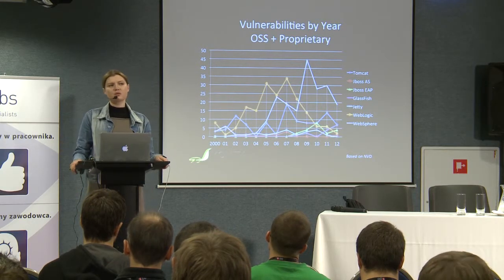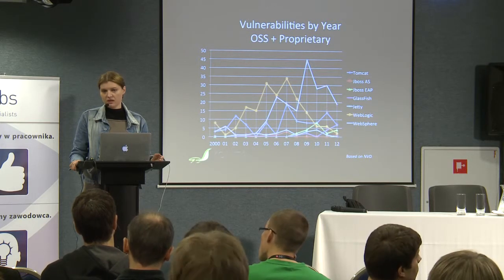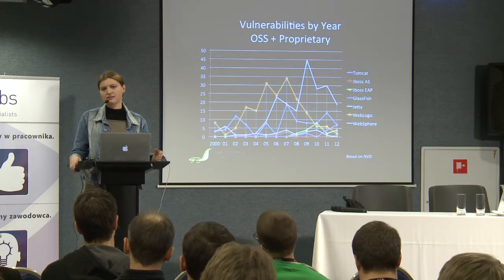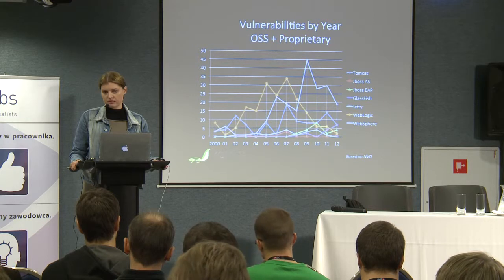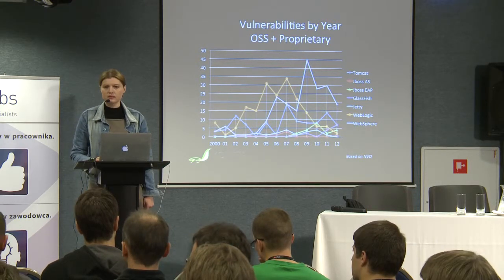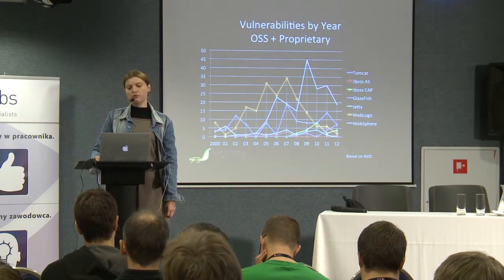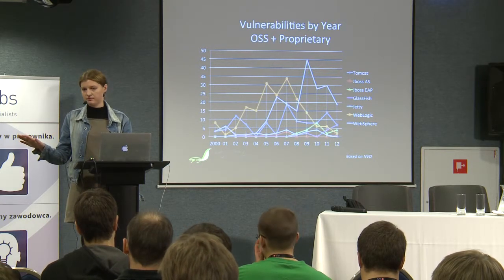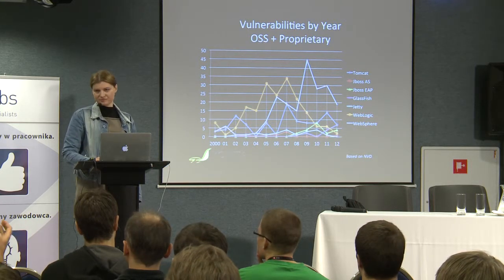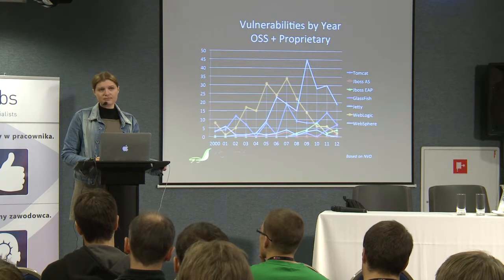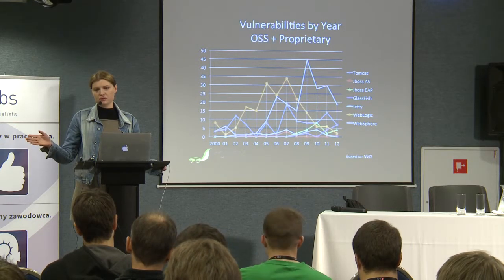About open bugs — usually the procedure is that first the vendor is informed about a security vulnerability, giving them a chance to fix it before public release. So it's difficult to get statistics on unfixed open vulnerabilities. I didn't do a detailed comparison, but for Tomcat on average it's about three months. I don't have data to say whether that's better or worse than closed software.